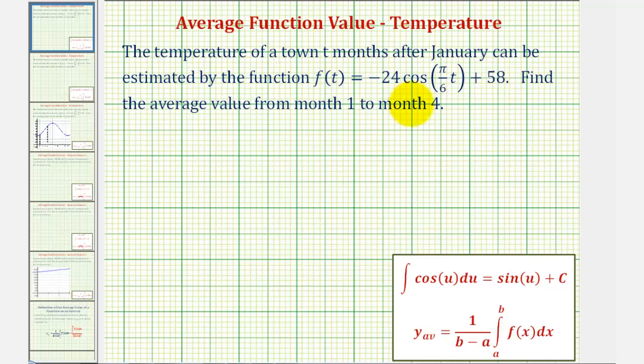An average function value over the closed interval from a to b is equal to one divided by the quantity b minus a times the definite integral of f(x) from a to b. In our case, we're trying to find the average value over the closed interval from one to four.